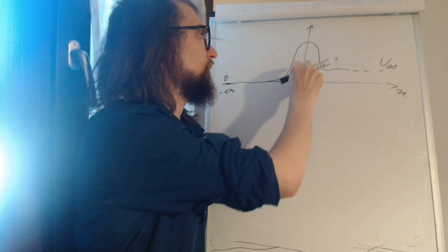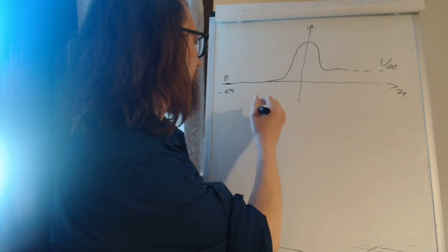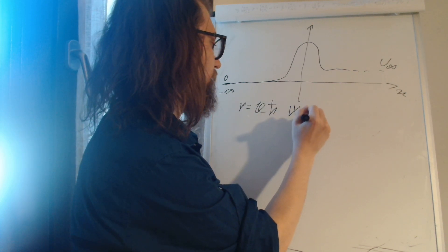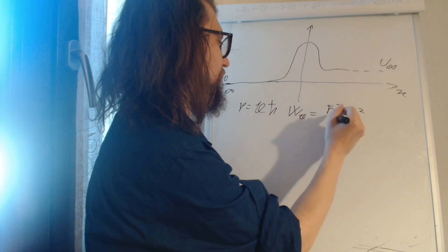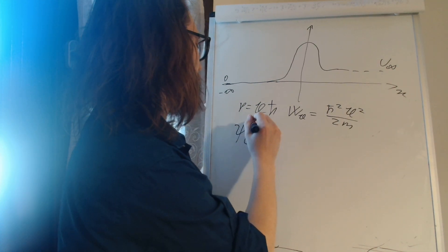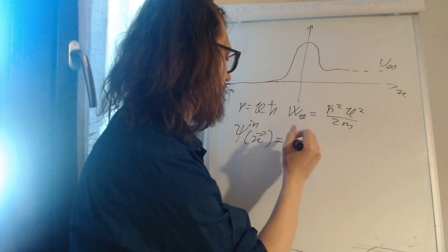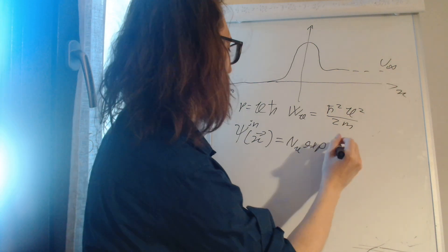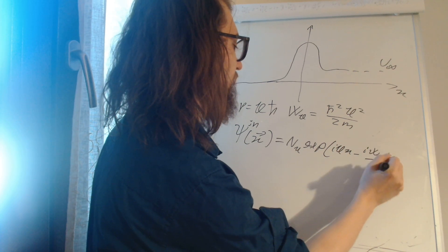Some of them will be reflected, some of them will be transmitted. The incoming particles will have a definite momentum p equals k h-bar, and an energy w_k equals h-bar squared k squared divided by 2m. So they will be described by the wave function psi incoming, which is a normalization constant n_k times the exponential of i k x minus i w_k t divided by h-bar.